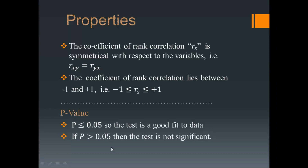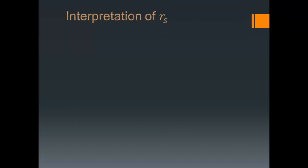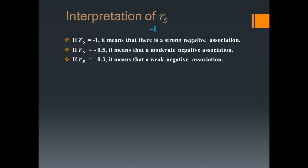And if the p-value is greater than 0.05, we can say that the test is not significant. Because the range of rank correlation is between minus 1 and plus 1, now let's look at its interpretation. If it is in negative form — if the value is exactly minus 1 — it means there is a strong negative association.